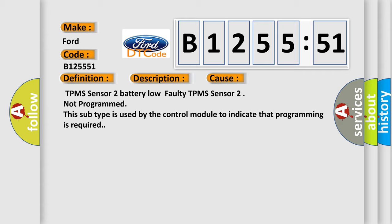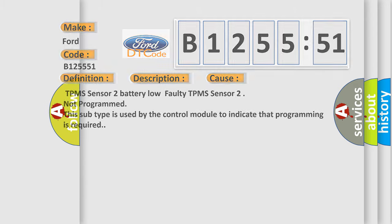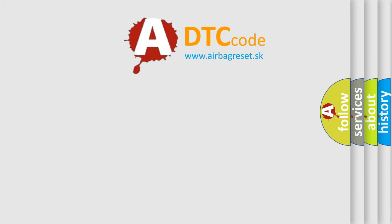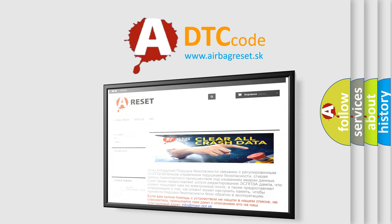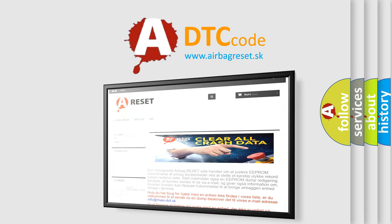TPMS sensor 2 battery voltage low, TPMS sensor 2 not programmed. This subtype is used by the control module to indicate that programming is required.